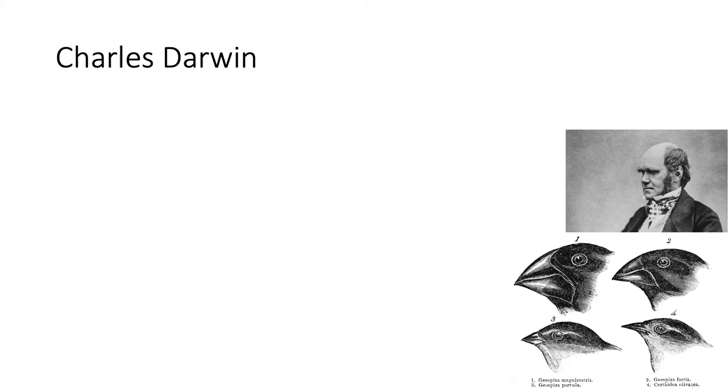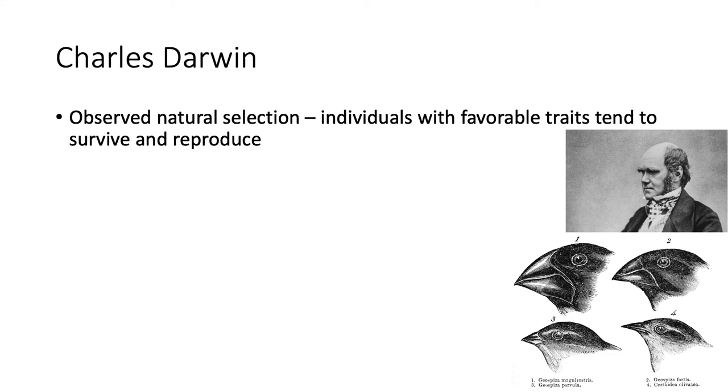Okay, so the moment someone says evolution, the first name that pops into anyone's head is probably Charles Darwin, which is because on his voyages on the HMS Beagle, he was really one of the first people to actually observe and detail evolution, which is also known as natural selection. Natural selection is really exactly what it sounds like. Individuals with favorable traits are selected by nature to survive and reproduce, while those with unfavorable traits tend to die out, so they do not reproduce.